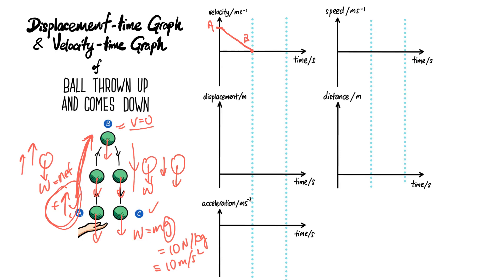Because the ball is going downwards, which is opposite to the positive direction I fixed, the velocity is negative. This doesn't mean it's slower than zero — the negative means the direction is opposite. So increasing speed going downward means the velocity gets more and more negative. At point C, just before reaching the hand, you have a constant negative slope. The gradient represents acceleration, so the acceleration is negative 10 m/s².